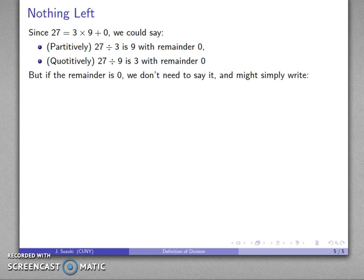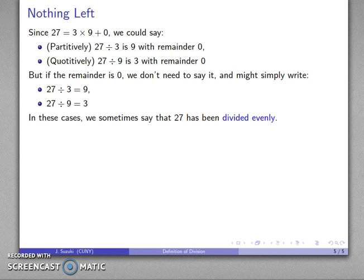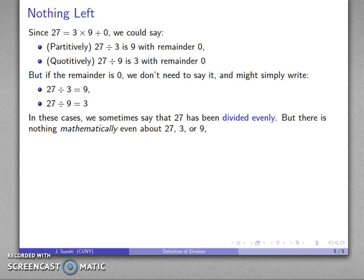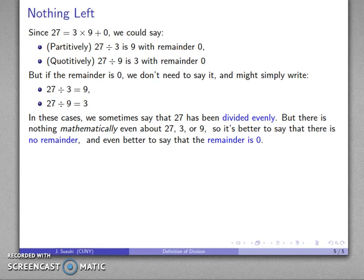If the remainder is 0, we might be tempted not to say that the remainder exists. And we might simply write 27 divided by 3 equals 9 and not indicate a remainder. Or likewise, 27 divided by 9 equals 3, and again, not indicate a remainder. In these cases, we might say that 27 has been divided evenly. But how you speak influences how you think. And when we say even, even has a mathematical definition. The problem is there's nothing even about these numbers. So saying this has been divided evenly suggests something that isn't true. And so it's probably better to say that there is no remainder. And even better, this implies the remainder doesn't exist. Well, it does actually exist. What exists is that there is a remainder of 0.